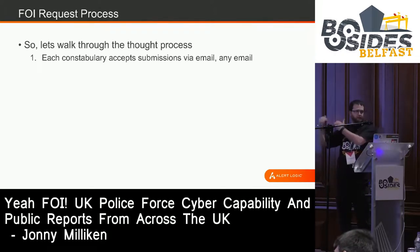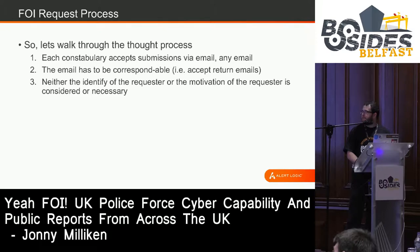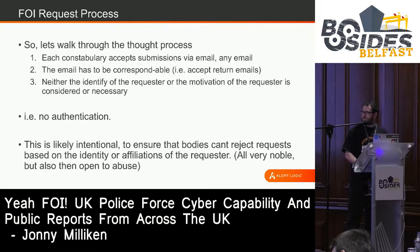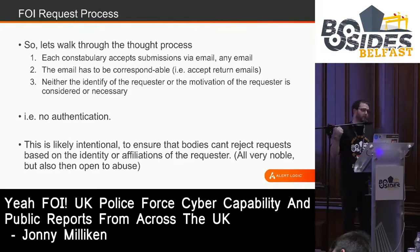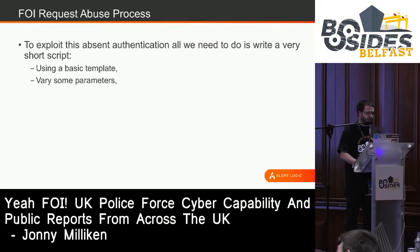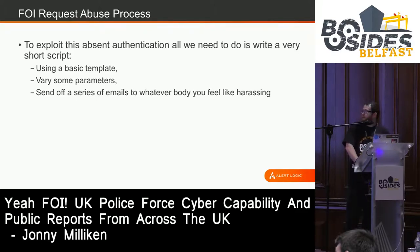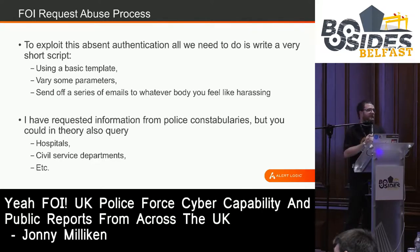All I had to do was send a relatively generic email with 51 email addresses, and you don't need to be a very devious mind to work out what you could conceivably do here. These requests can be sent with any email — any email at all, as long as it's correspondable. Neither the identity of the requestor nor the motivation is considered or necessary — that's pretty much no authentication. This is likely intentional: the whole point of the Freedom of Information Act is to allow people to find out about government. But that also leaves it open to abuse. All you need to do is write a very short script, use a basic template, vary a couple of parameters, and send off a series of emails to whatever public body you feel like. It's not just 51 police — pick hospitals, civil service departments, educational boards, whatever you want.